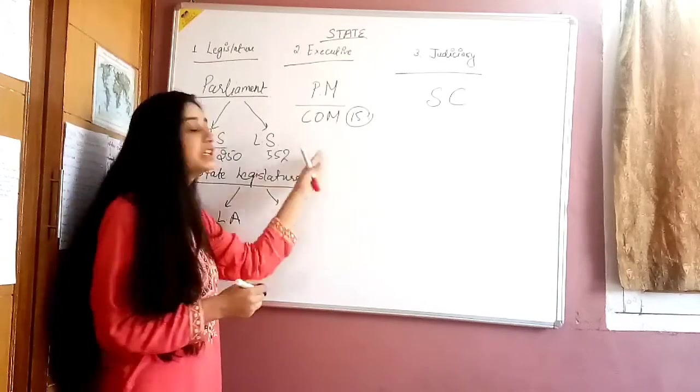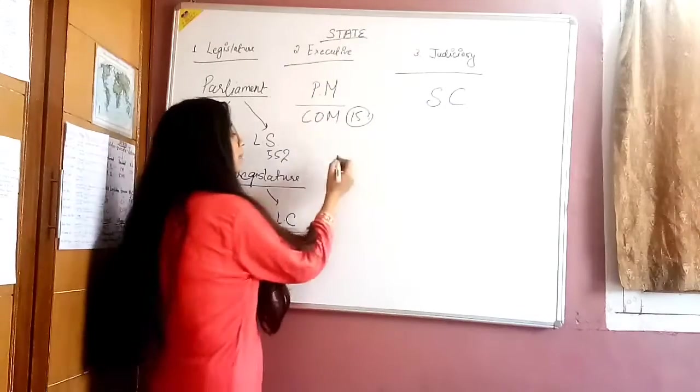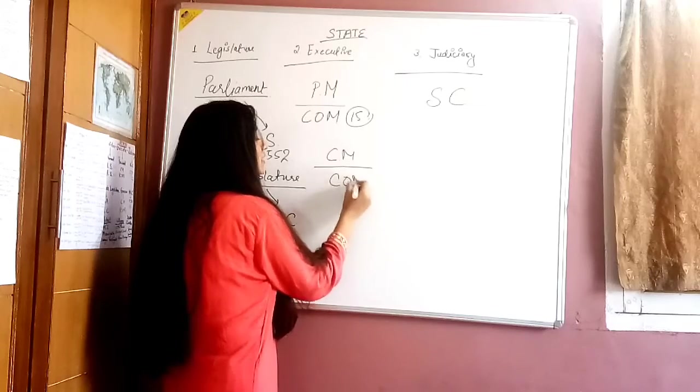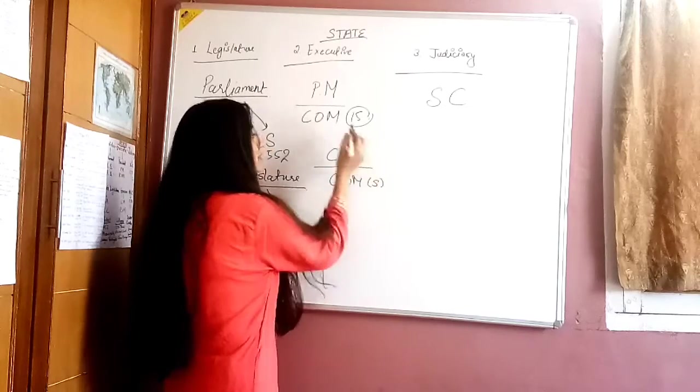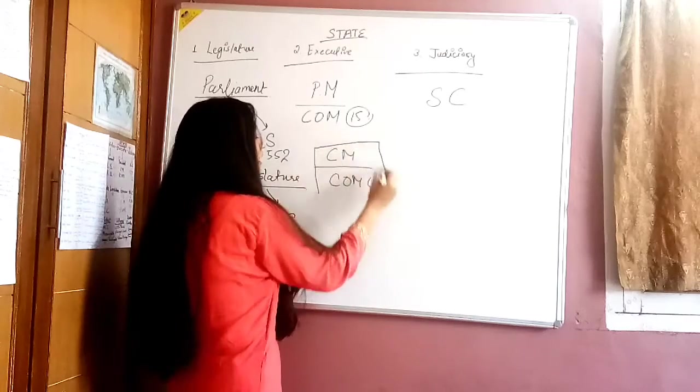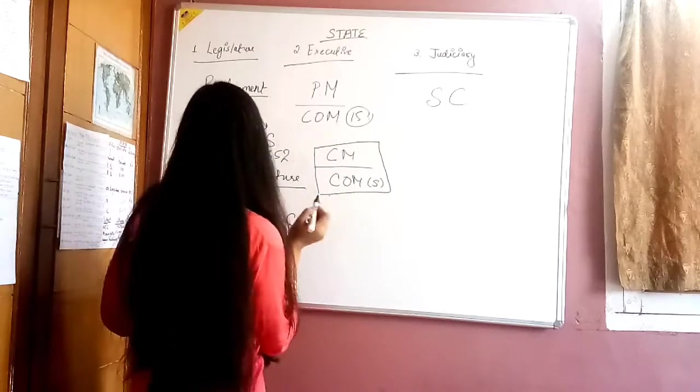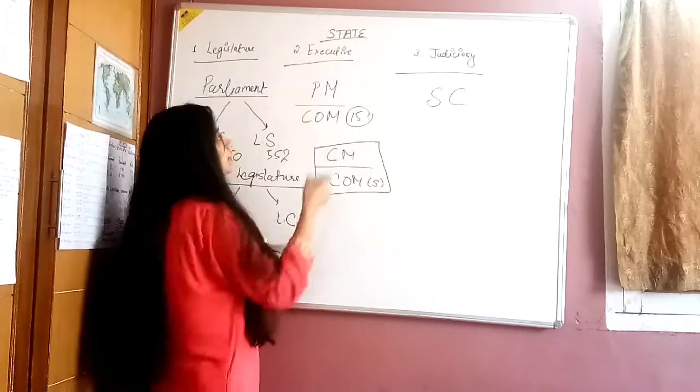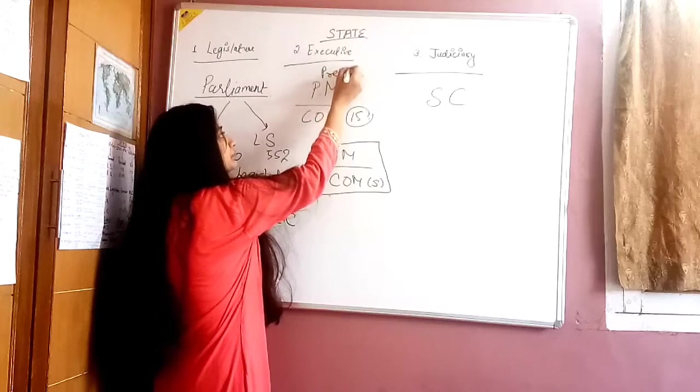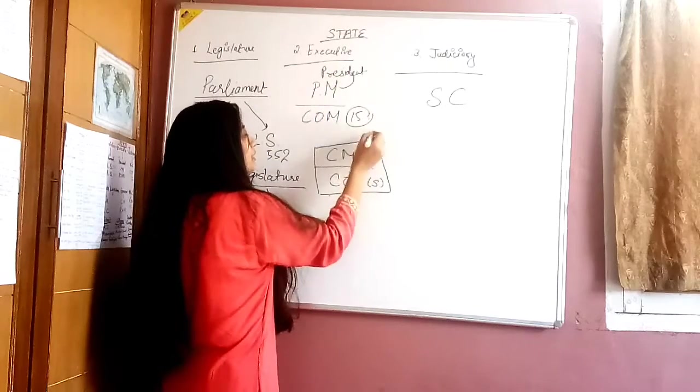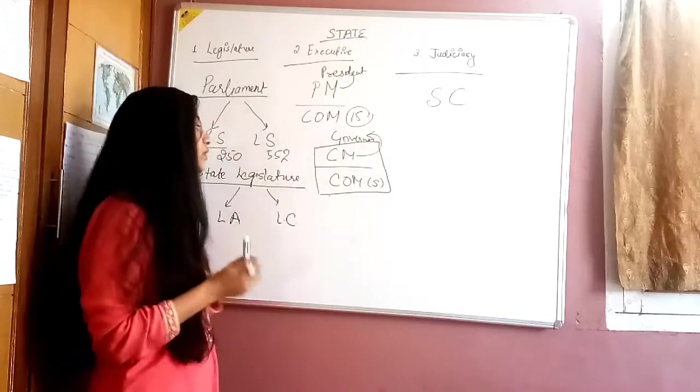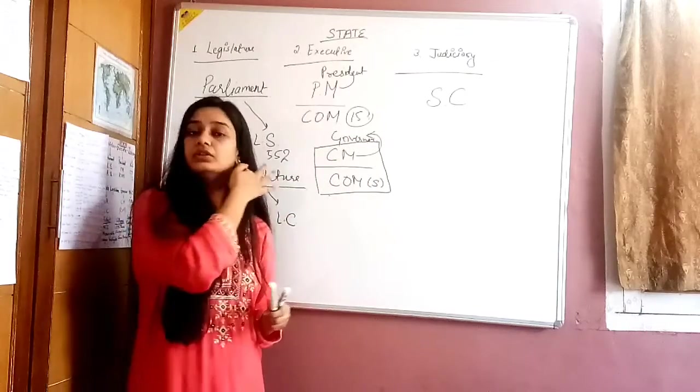Let's talk about the state level executive. This is our Chief Minister plus Council of Ministers of state level. When we talk about union level, PM is the head with President. And CM is the head with Governor. The Governor governs all the states and helps to pass the government.